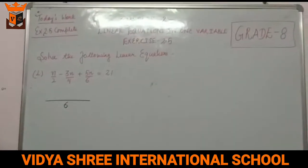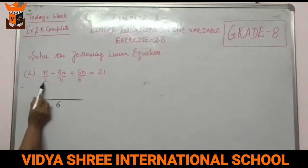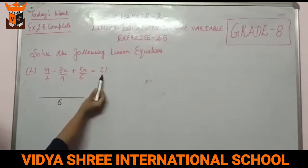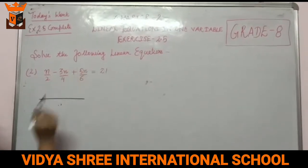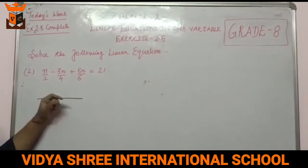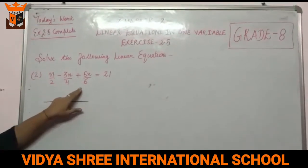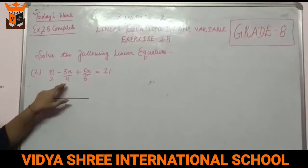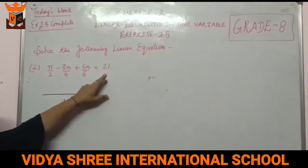This is Exercise 2.5, question number 2: N/2 minus 3N/4 plus 5N/6 equals 21. Solve the following linear equation. You can see that the N variable terms are already on the left hand side and the number 21 is on the right hand side.